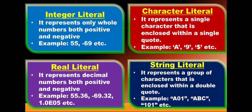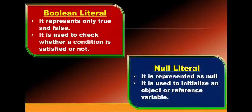Boolean literal is a special literal which represents only two values — true and false — and it is used to check whether a particular condition is true or false. Null literal is represented as null, which is used to initialize an object or reference variable.